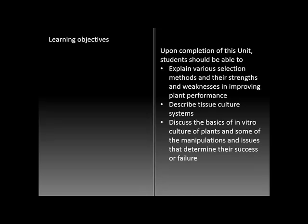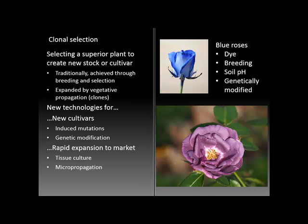When we're done here, you should be able to explain various selection methods for plants and their strengths and weaknesses in improving plant performance, discuss and describe tissue culture systems at a high level, and understand the basics of in vitro culture of plants and some of the manipulations and issues that determine their success or failure. The first topic is clonal selection, and the goal here is to select a superior plant to create a new stock or cultivar.